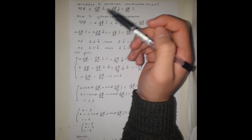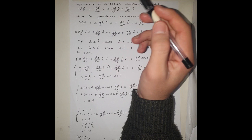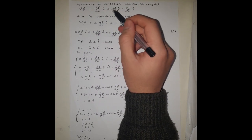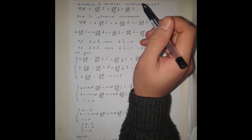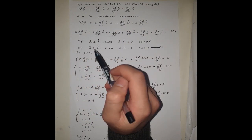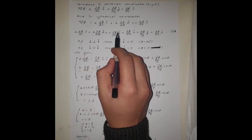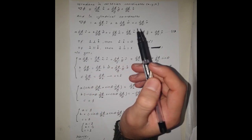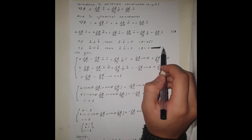Since we have calculated the gradient of the same scalar field, the value of the gradient is going to be the same for both the cylindrical and Cartesian coordinate systems, and from this fact we can derive the required expression. We can single out the components of the left-hand side by taking dot products with the cylindrical unit vectors. Before that, let me point out some properties of unit vectors.